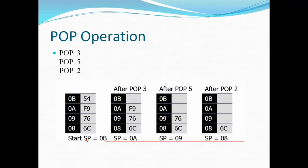Now we will understand how the pop operation takes place. In the first picture of the stack, the stack is already loaded with data: location 08H contains 6CH, location 09H contains 76H, location 0AH contains F9H, and location 0BH contains 54H.